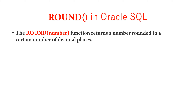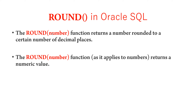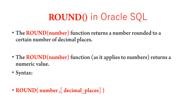First we will see the round-off number function. The round-off number function returns a number rounded to a certain number of decimal places. If you want to round a number to a certain decimal point, you can use the round-off number function. The syntax is round-off with the number value as input and the decimal places. The decimal places parameter is optional — you can pass it or skip it based on your requirement.